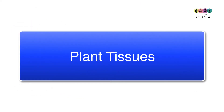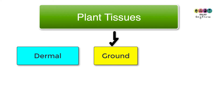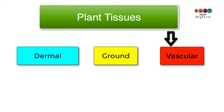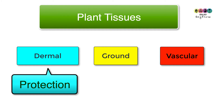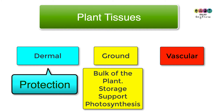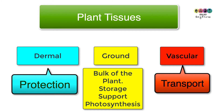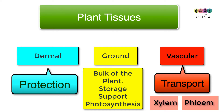As this chapter is about plant structure, we have to discuss the plant tissues. There are three types: dermal tissue, ground tissue, and vascular tissue, and it's really important that you can give a function of each. Dermal tissue is for protection. Ground tissue makes up the bulk of the plant — storage, support, and photosynthesis are three of its functions. Vascular tissue is for transport: xylem transports water and minerals upwards through the plant, and phloem transports food downwards.